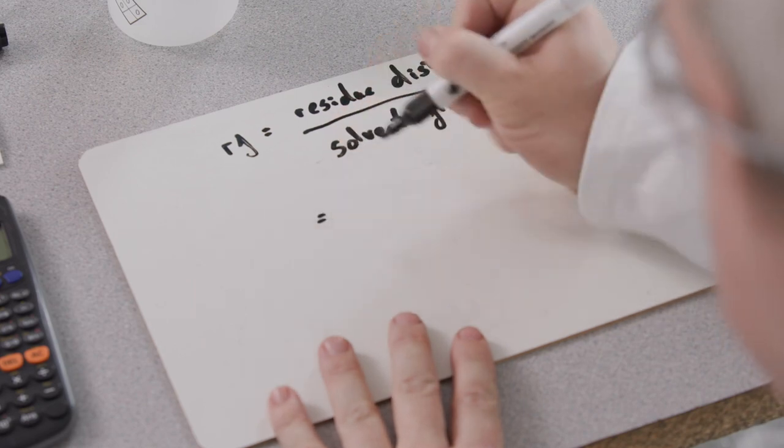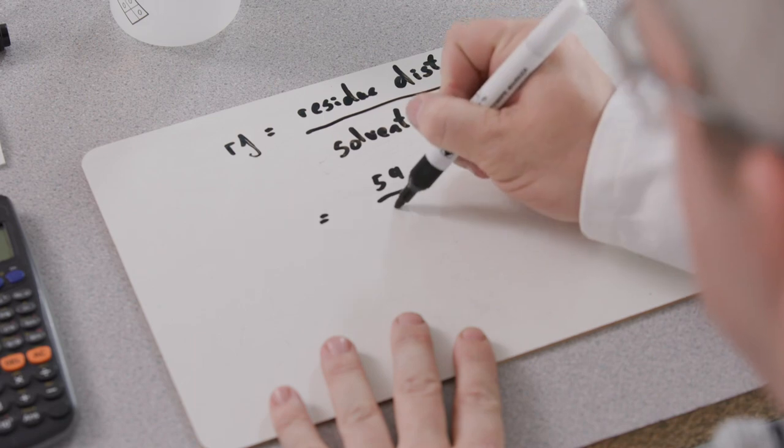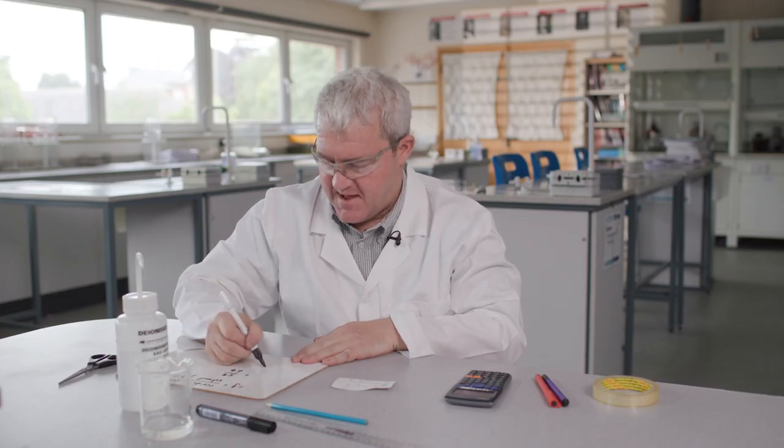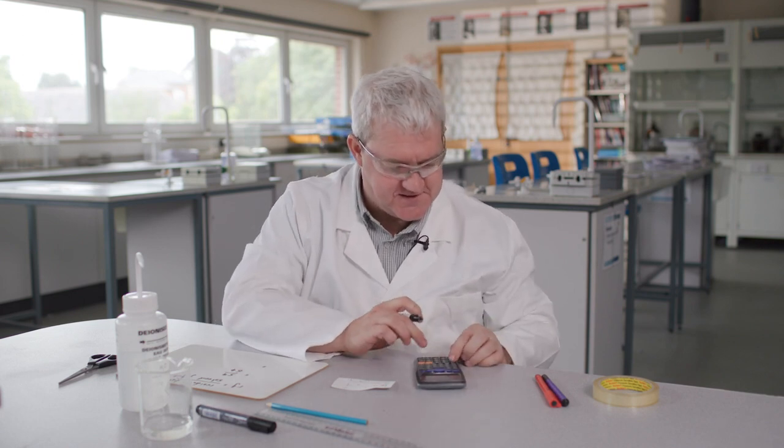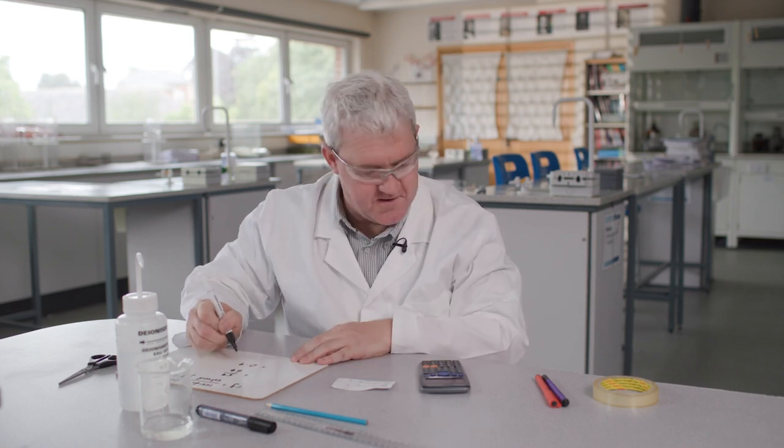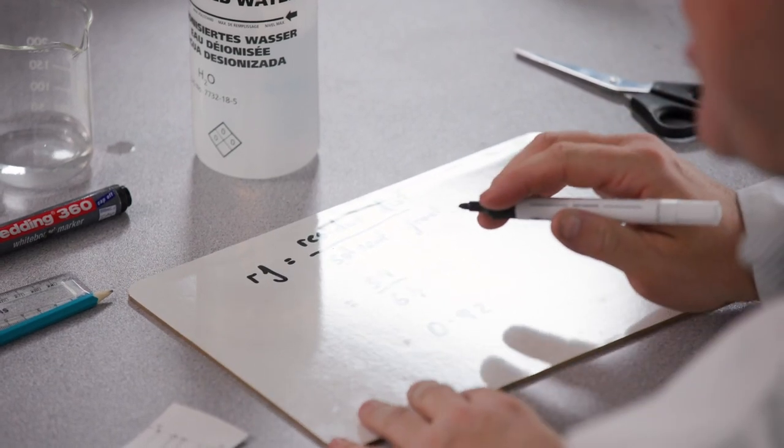So if I'm going to calculate the RF value for the residue at 59 millimeters, that will equal 59 divided by my solvent front, which is 64 millimeters. And that gives me a value here, 59 divided by 64, of 0.92.